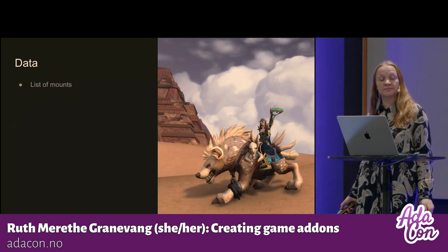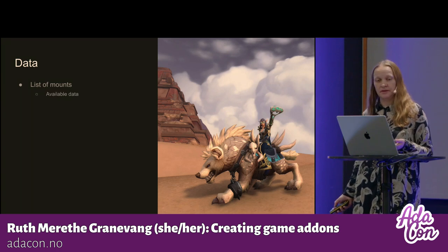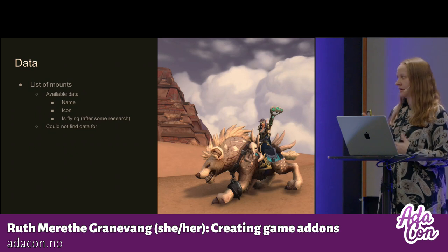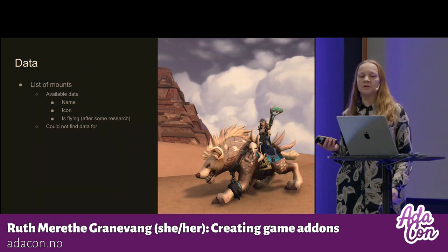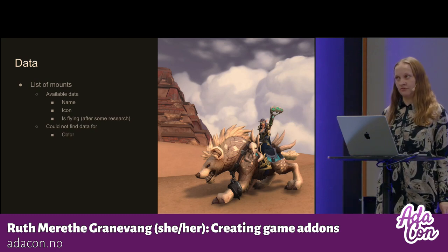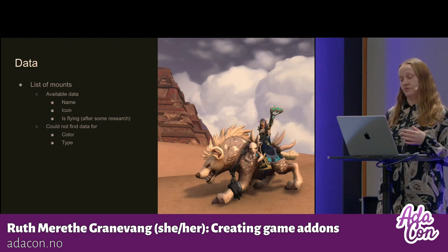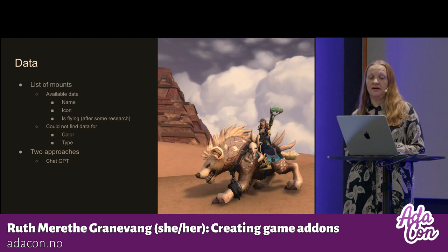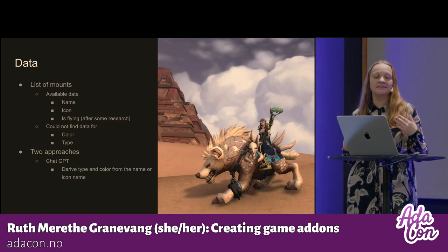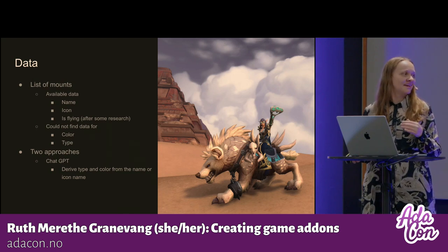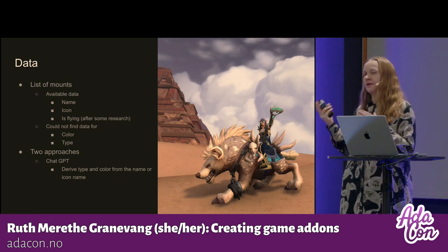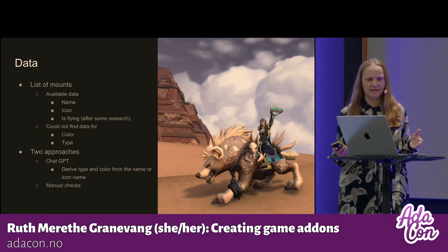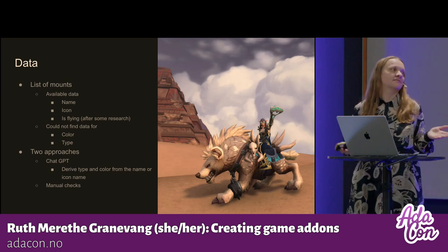I extracted the list of mounts from the game. It was easy to get the name of the mount, the icon, and whether it's flying or not. But what I couldn't find any data for — and what was probably the reason why this add-on did not exist already — was the color of the mount and what type it was. So I did a combination of two different approaches: I fed all the data I had into ChatGPT and let it guess the color and type. For instance, if the icon name was something like 'blue dragonhawk', it could guess that blue was the color and that it was some kind of bird. But in the end, I had to do a lot of manual checks to create the data.